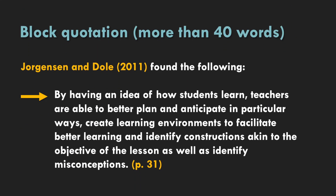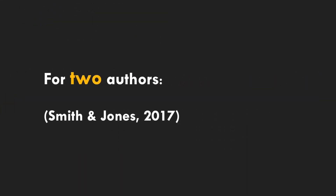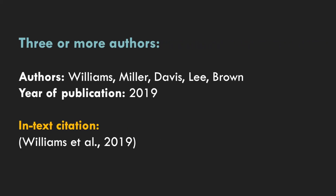Block quotations refer to quotes that include more than 40 words. When you're doing this, you'll include an indent so that the block of words is clearly marked as separate to the rest of the text. If you have two authors, you separate them with an ampersand in brackets — for example, Smith and Jones (2017). If there are three or more authors, your in-text citation will feature the name of the first author and then the phrase 'et al.' — which basically means 'and everybody else' — followed by the year.